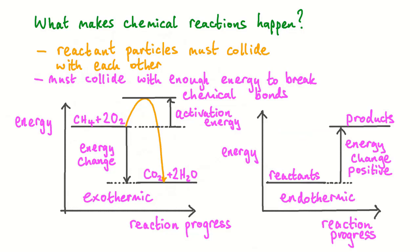The situation is similar for an endothermic reaction, where heat is absorbed from the surroundings and the products finish at a higher energy level relative to the reactants. Endothermic reactions, like all chemical reactions, also require activation energy to get them started. We must raise the energy level of the reactants above that of the products to provide this activation energy. In summary, some reactions are harder to get started than others because they have a high activation energy.